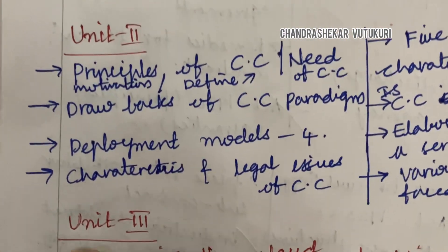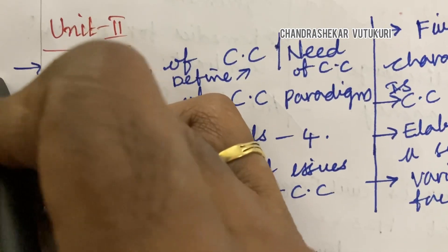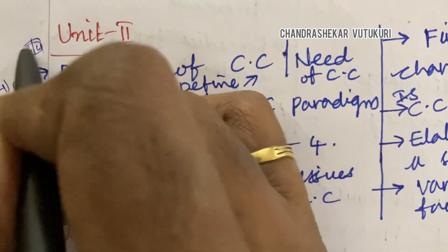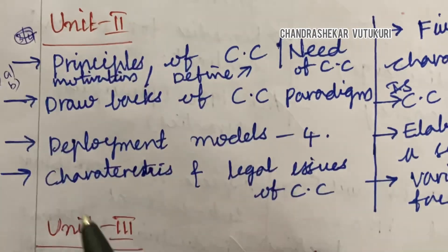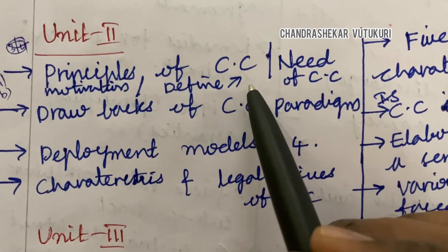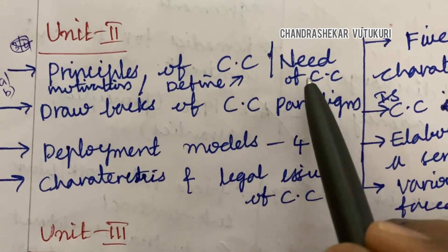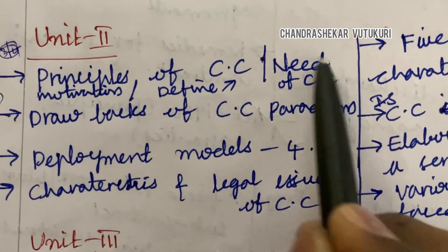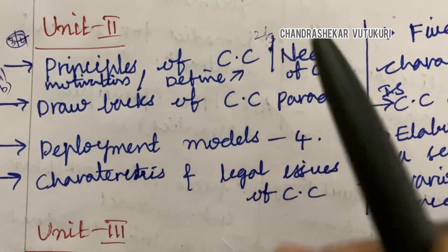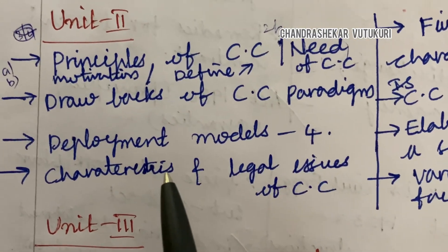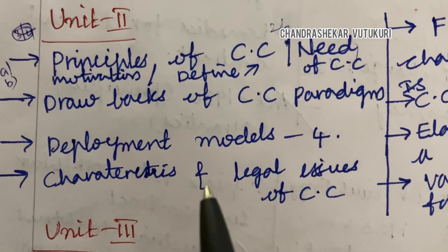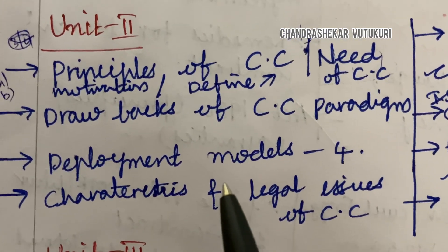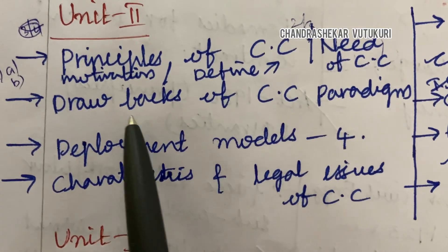Let's look into Unit 2, covering questions 4A, 4B and short questions C and D. Principles of Cloud Computing, Need of Cloud Computing, Motivation, and Define — from this part you will be getting 2 to 3 combination questions. Dear students, do not skip any part of the questions I am going to highlight here, as you are going to score 15 marks from this unit.